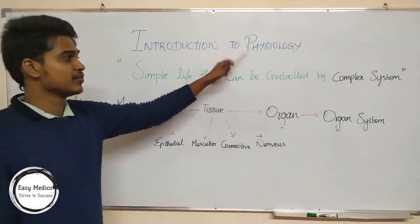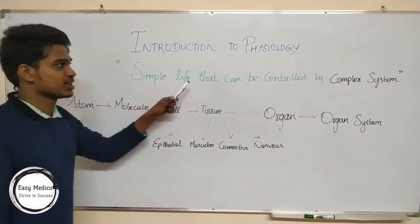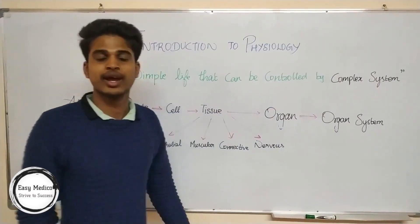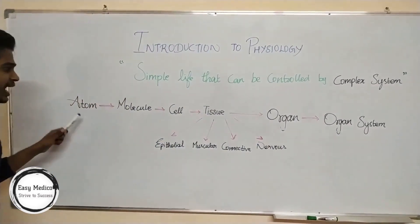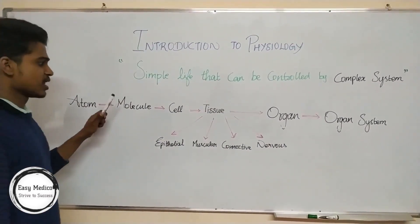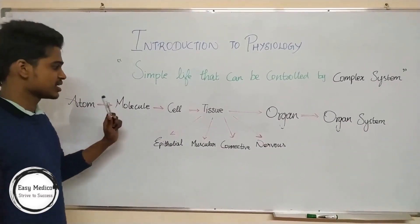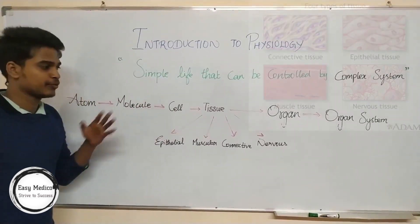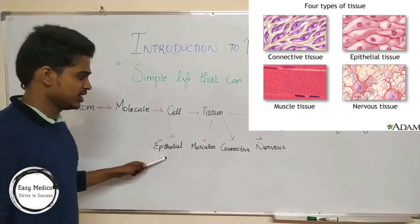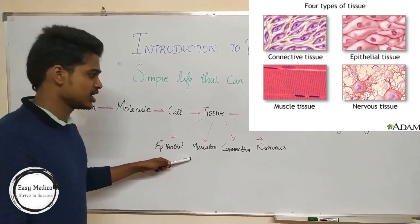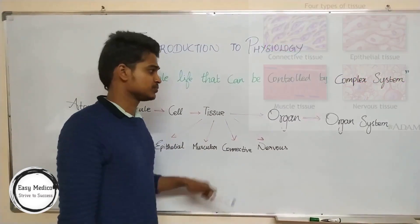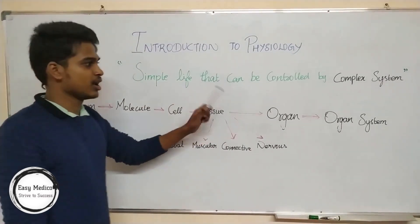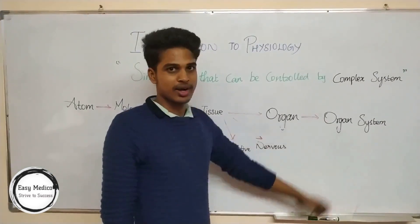Now we can see what is physiology. Simple life that can be controlled by a complex system. What is a complex system? Atoms make molecules, molecules make cells, cells make tissue. There are four kinds of tissue: epithelial, muscular, connective, and nervous tissue. These four tissues make an organ, and that organ makes an organ system.